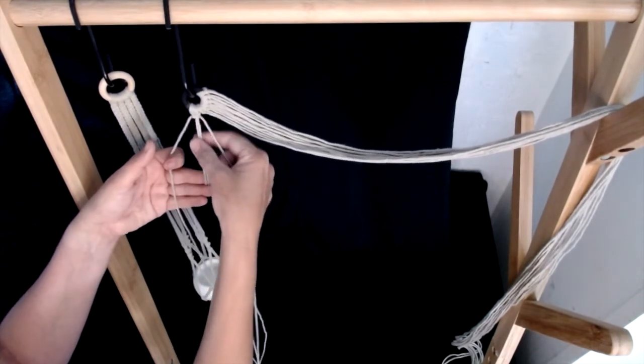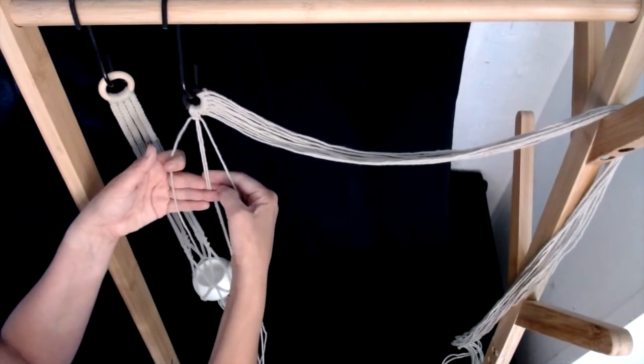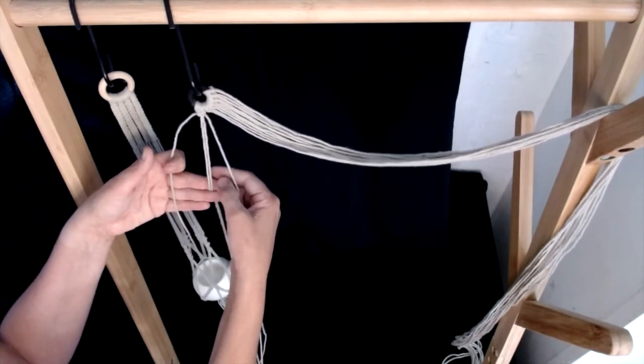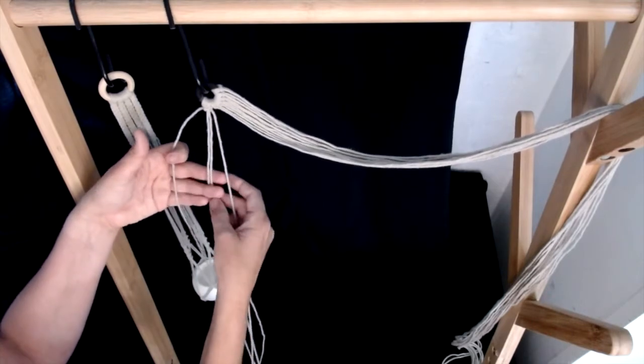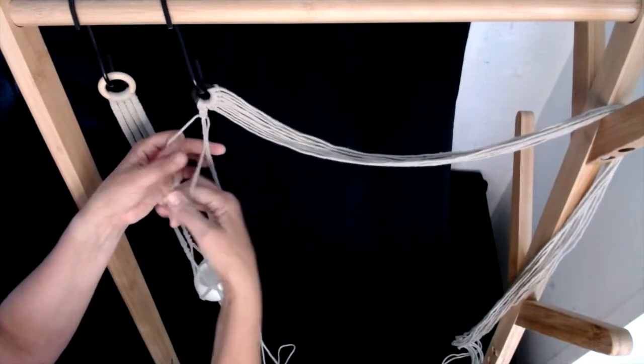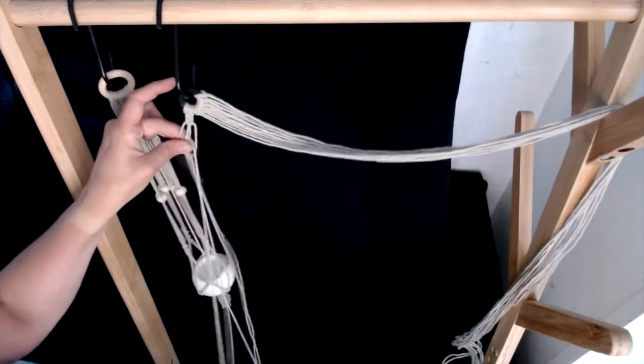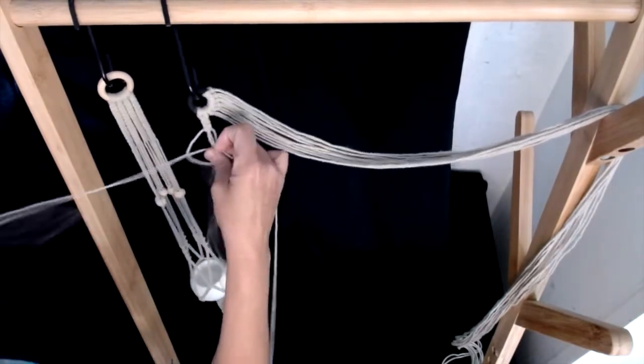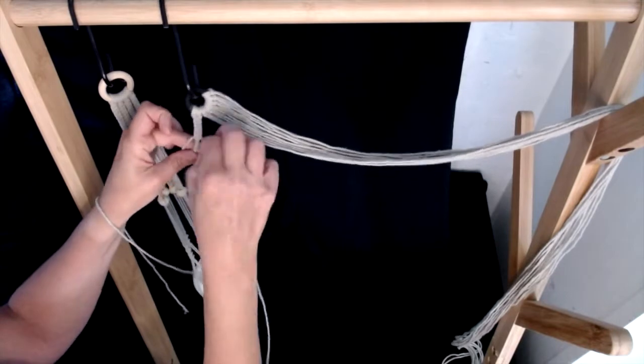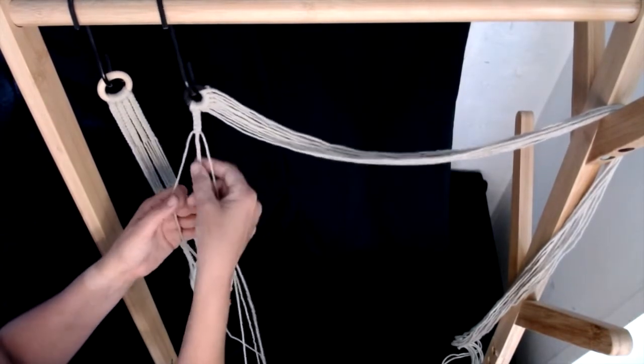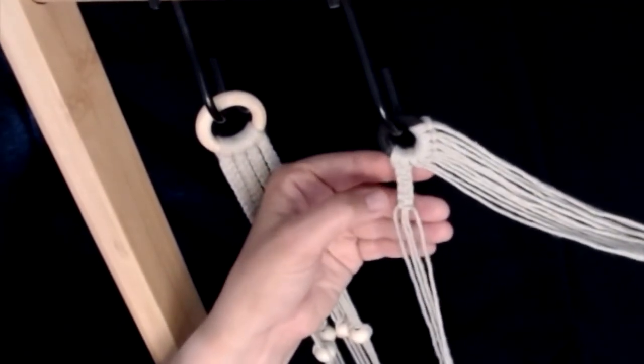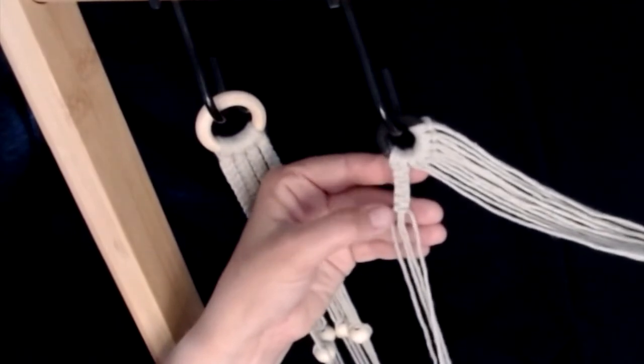We're going to continue this coming down this first group of strands and we're going to do 15 square knots. So 15 on the left and 15 on the right. Continue this till you have 15. If you struggle remembering which side your last knot is on, you might find it helpful to see where your last front loop is.